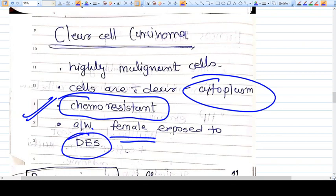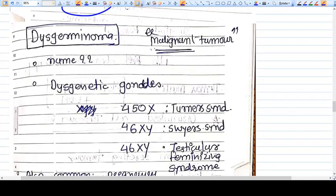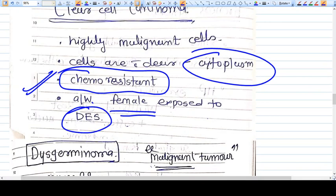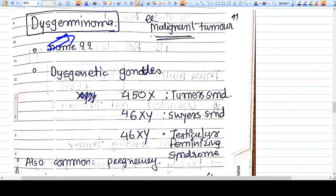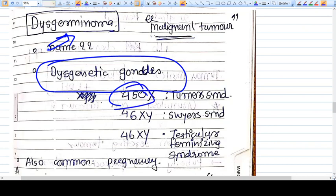Now let's discuss dysgerminoma. These tumors we've discussed so far were epithelial tumors. Now come germ cell tumors, and dysgerminoma is the most common germ cell tumor. As the name suggests, it will be common in dysgenetic gonads.